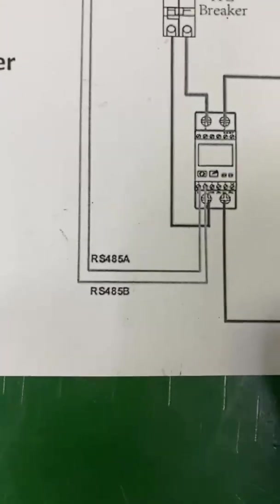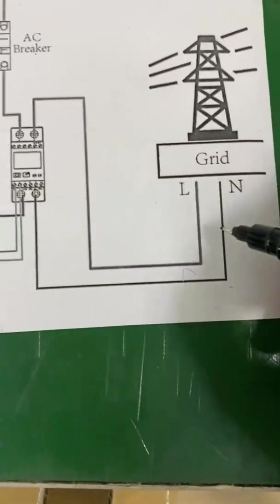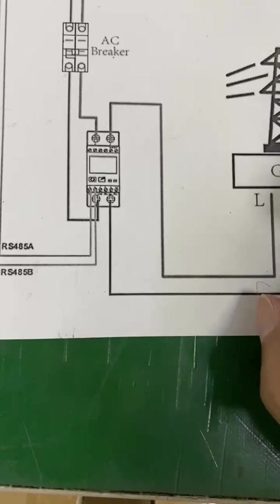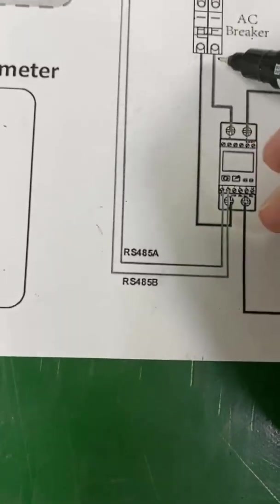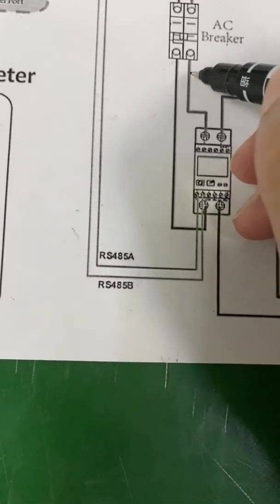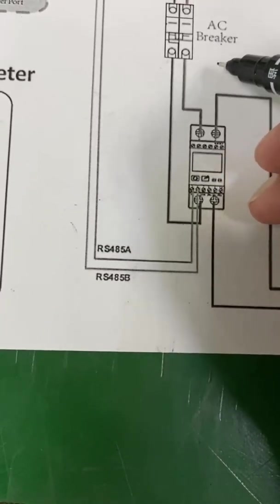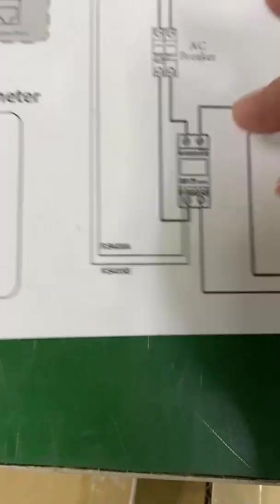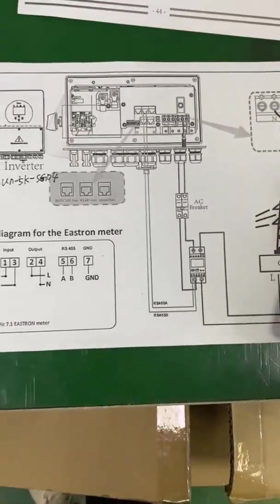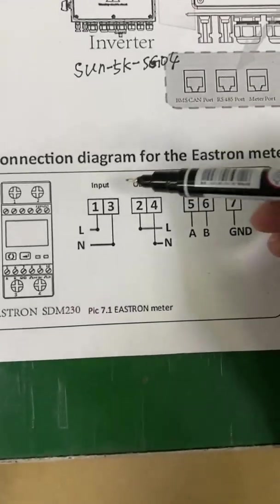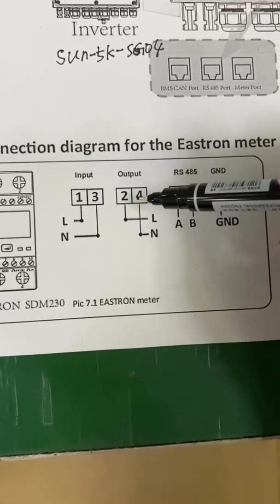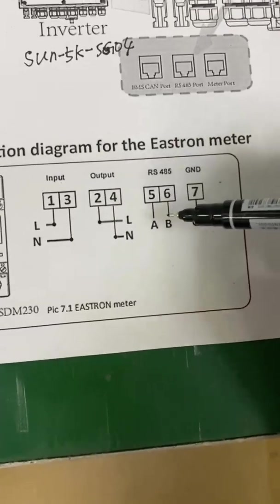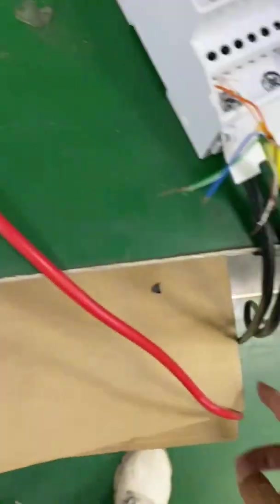And if you have a home load, your home load should be on the grid side. You can put your home load at this port. At this port. Here is the terminal. Now here we can see terminal 1 and terminal 3 input. Terminal 2 and terminal 4 is the output.